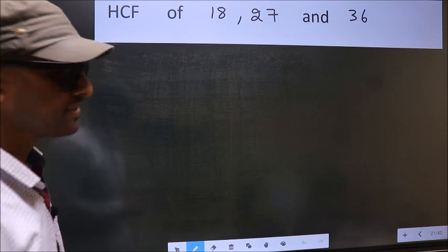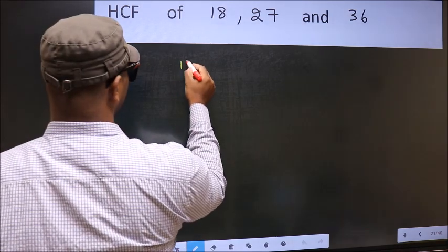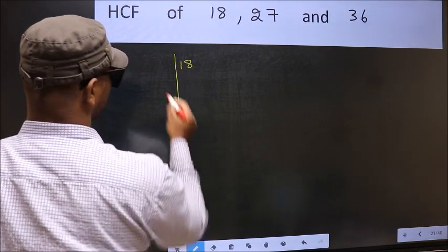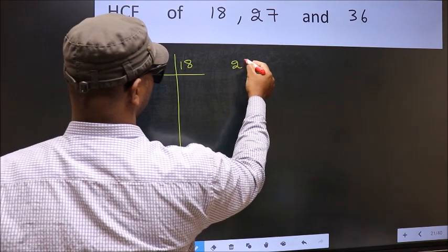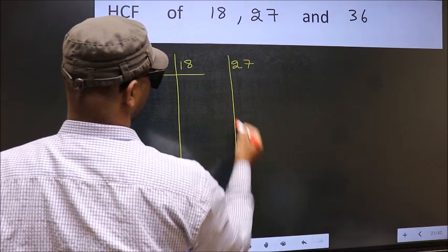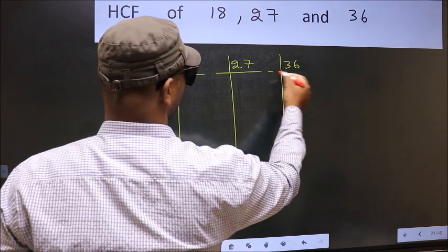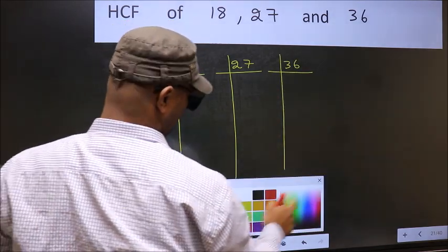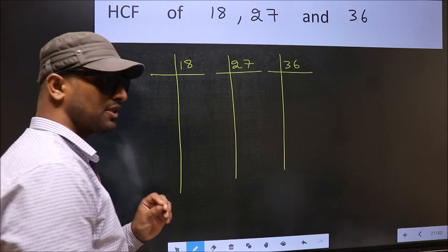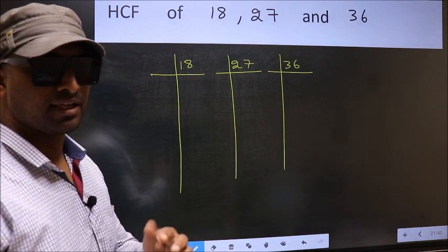What I mean is 18, 27, 36. This is your step one. Next.